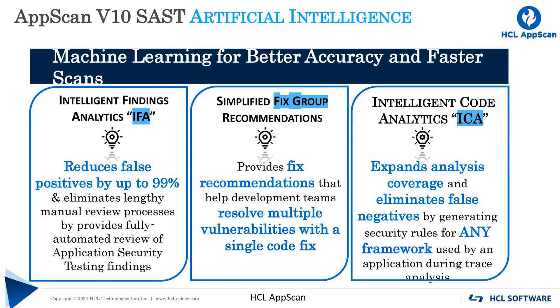By making code simpler for developers, they become more opaque to testing systems. Identifying these APIs and creating rules around them, referred to as a markup, can take several weeks or more, leaving gaps in the testing system's coverage.